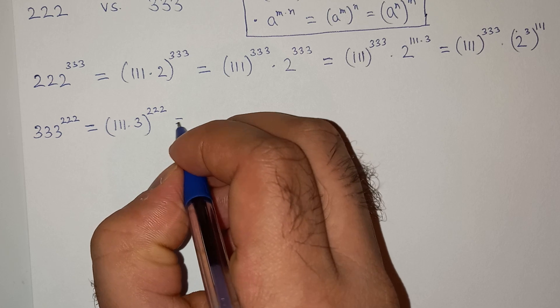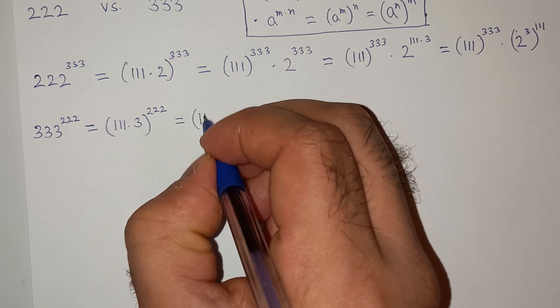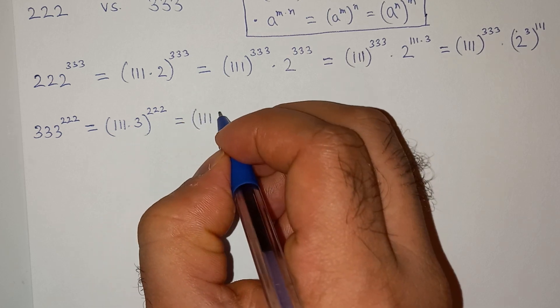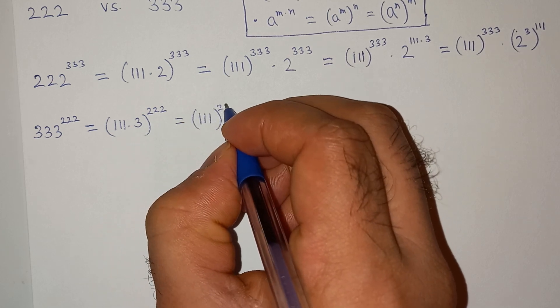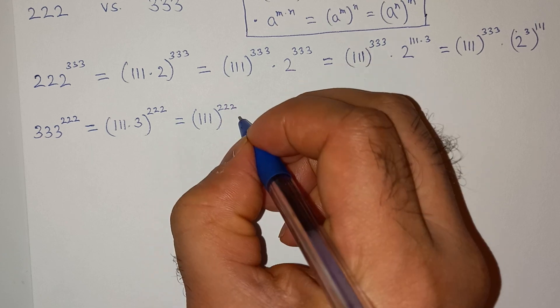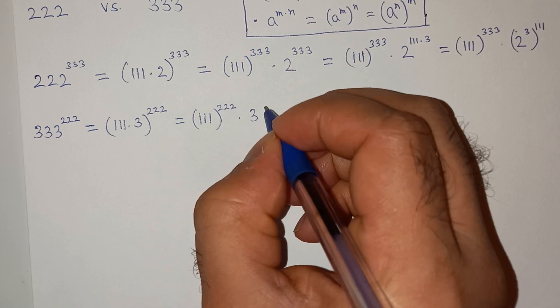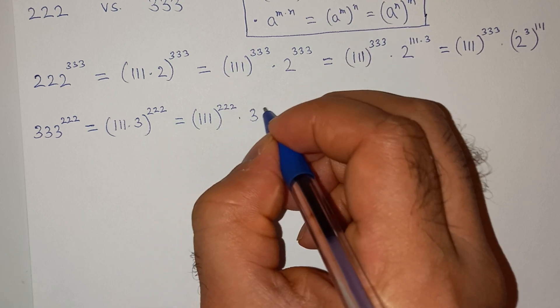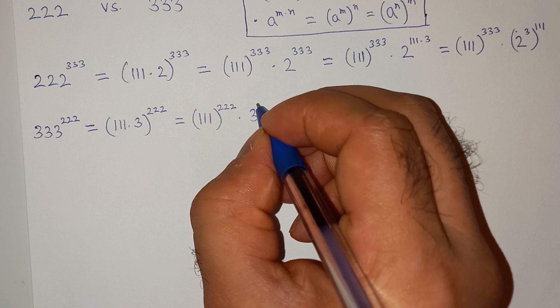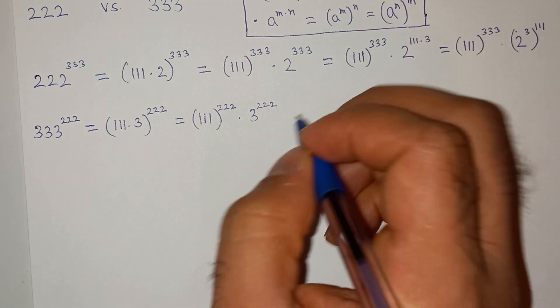Equals to triple 1 power triple 2 multiplied 3 power triple 2.